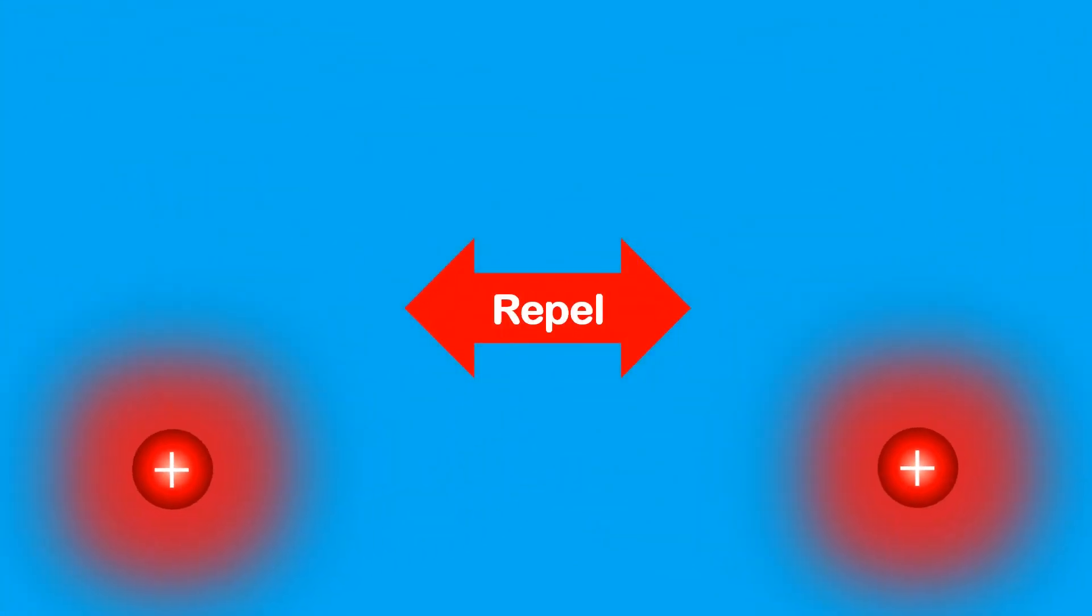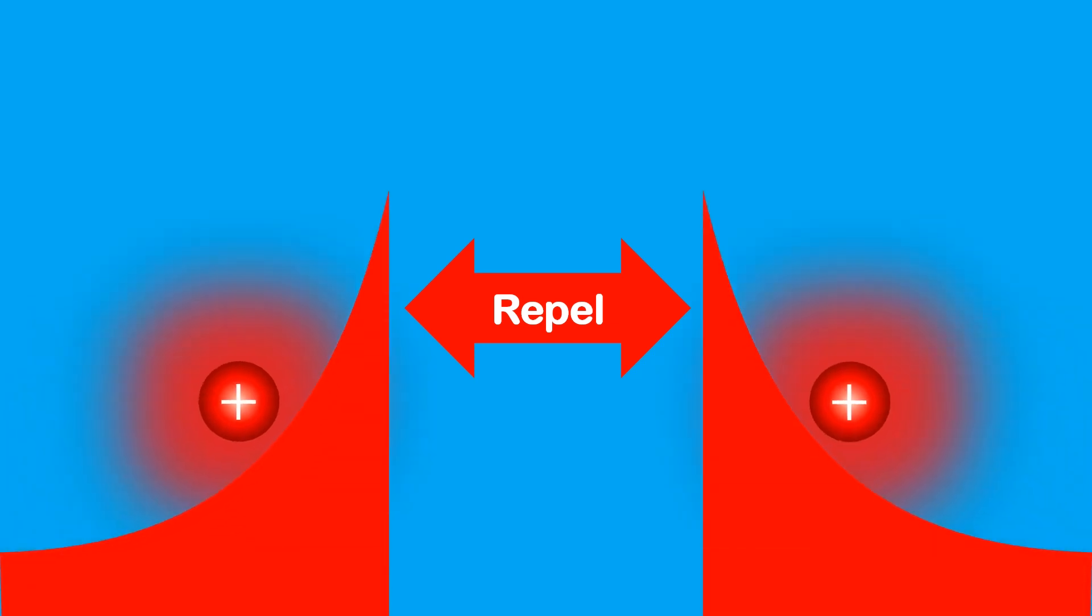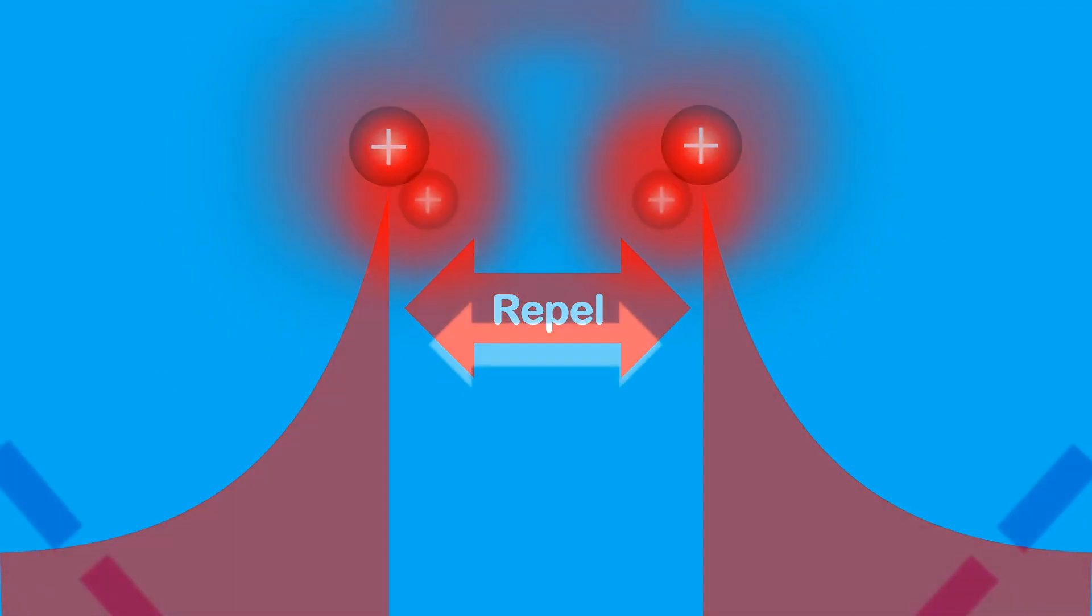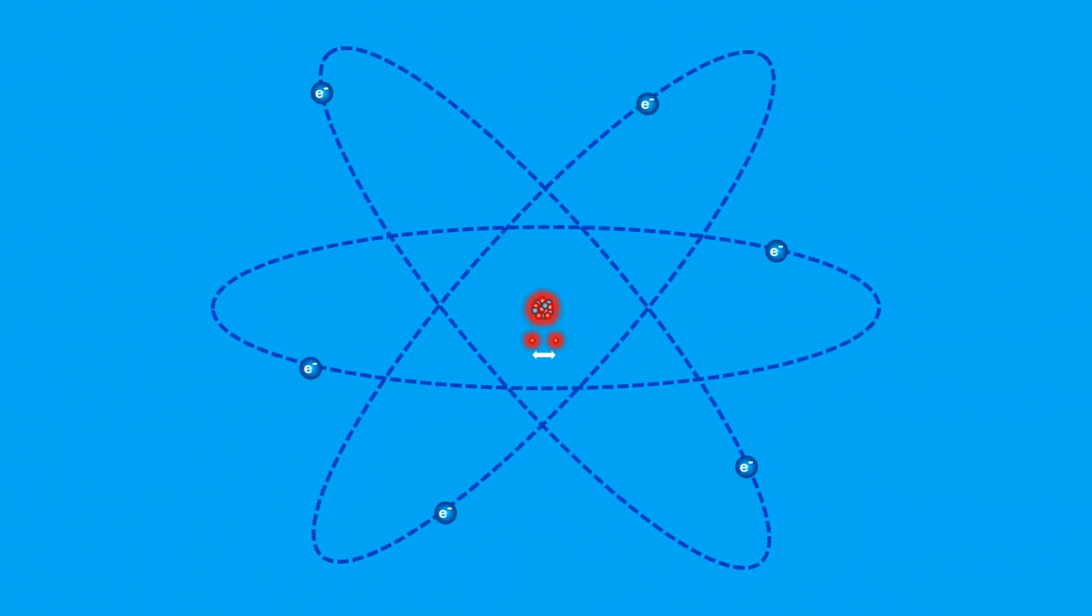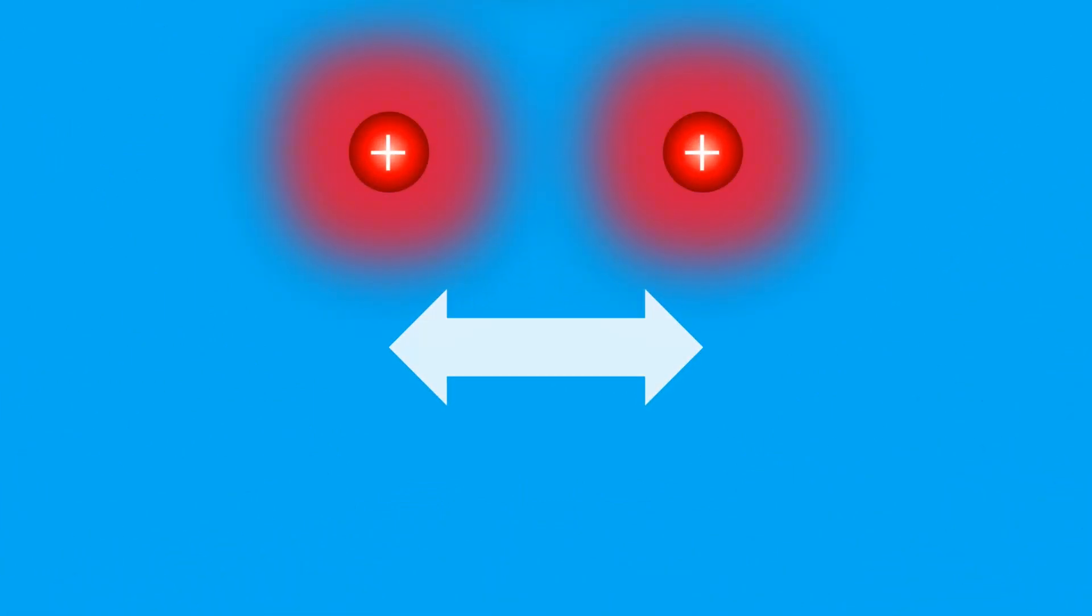But because nuclei have a positive charge, the electrostatic force pushes them apart, and getting them close enough to fuse is like climbing an increasingly steep hill. But if you get them 100,000 times closer than the width of an atom, an even stronger force takes over.